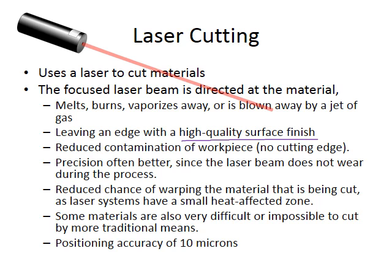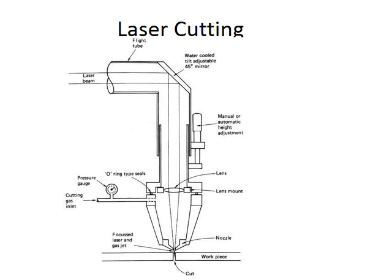The precision is better, the laser beam does not wear during the process so it doesn't need to be changed as much. There's a reduced chance of warping the material being cut as laser systems have a small heat affected zone — we'll discuss that in a moment. Some materials are very difficult or impossible to cut by more traditional means, so laser cutting is fast replacing them, with a positioning accuracy of 10 microns, making it a very dependable machining tool. Let's look at a schematic of laser cutting — the laser beam enters a tube.